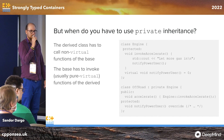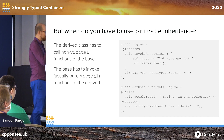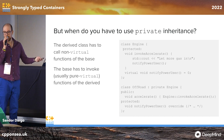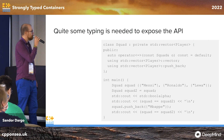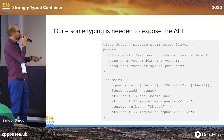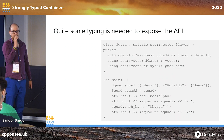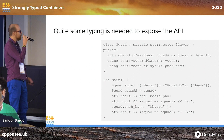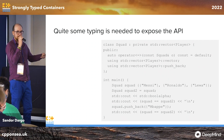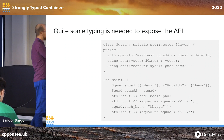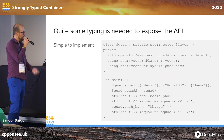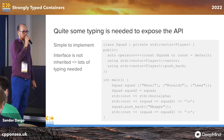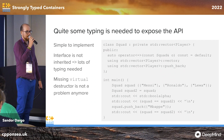How would private inheritance be useful for strongly typed containers? Now you have to type quite a lot to expose the API that you want, because with private inheritance the accessibility of the API is not inherited — you have to expose it yourself. You also have no problem with polymorphism — it's not a problem that there is no virtual destructor.